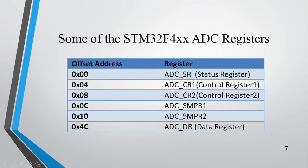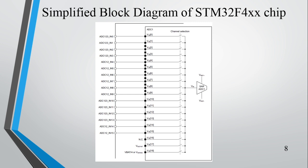These are the ADC registers present in the STM32F446 controller: ADC SR (status register), CR1 (control register 1), CR2 (control register 2), SMPR1 (sampling time register), and data register. These are few of the important registers we need to configure. In STM32F446, there are a total of 19 channels. Each channel can be used for connecting a separate sensor, but only one channel will be connected to the successive approximation ADC at a time.